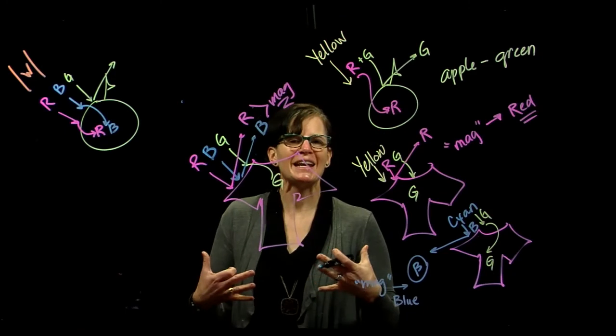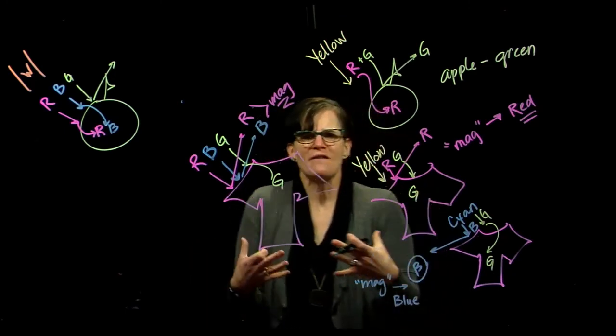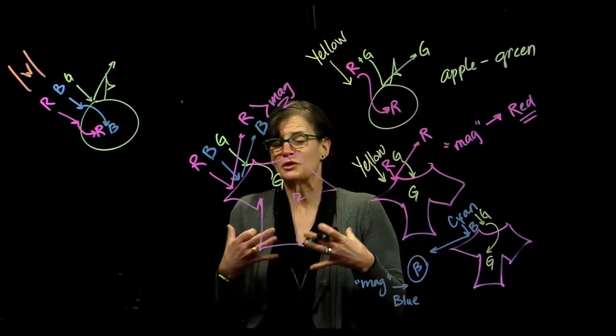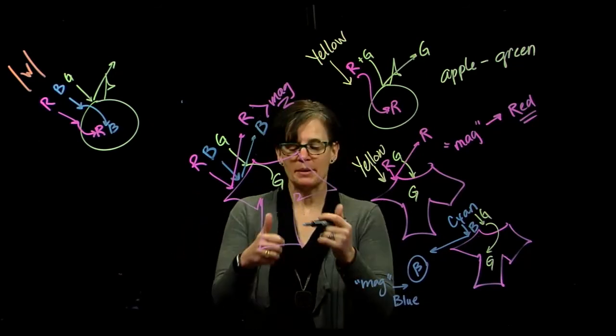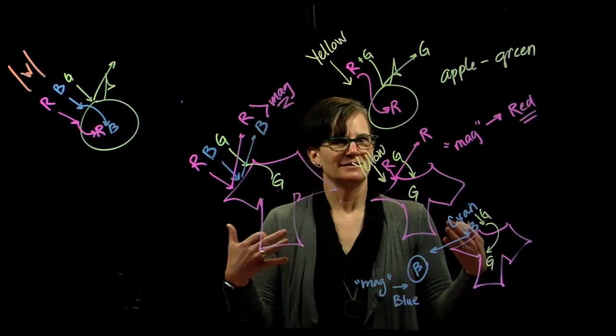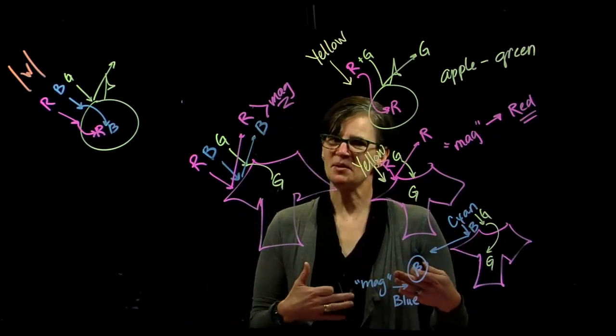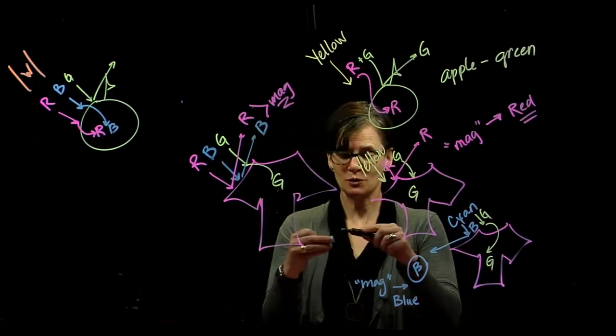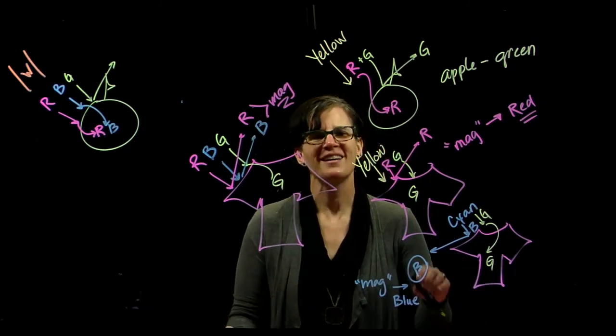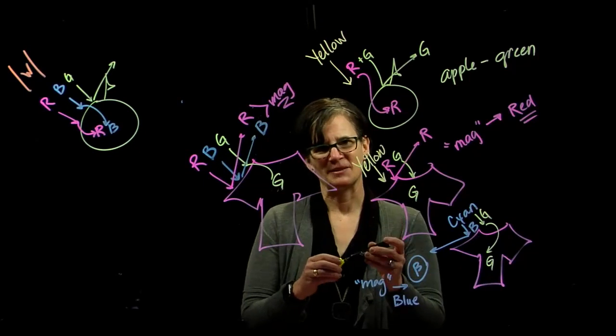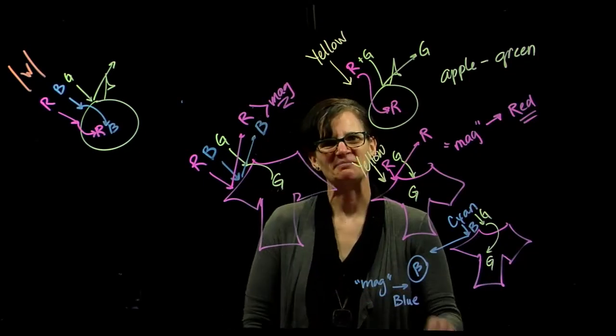So we can change the color of the object, not fundamentally in terms of what it reflects or what it absorbs, but visually by presenting it with light that it either reflects or absorbs. We can control what light is reflected, and therefore what color we see the object. Alright, good job. Thank you.